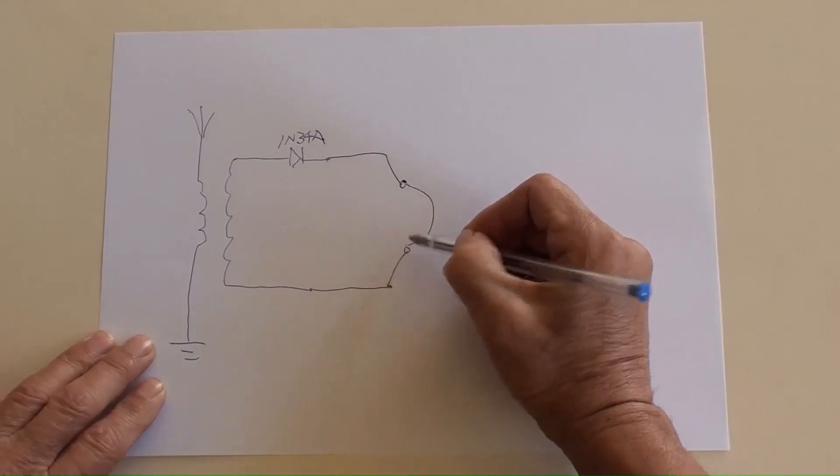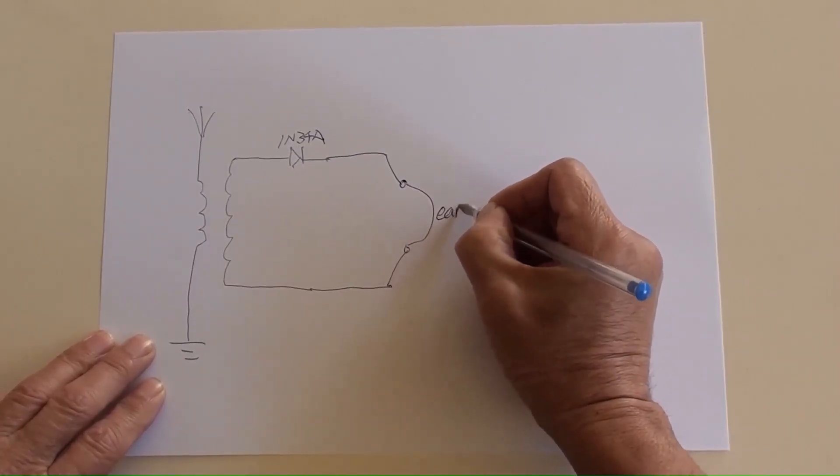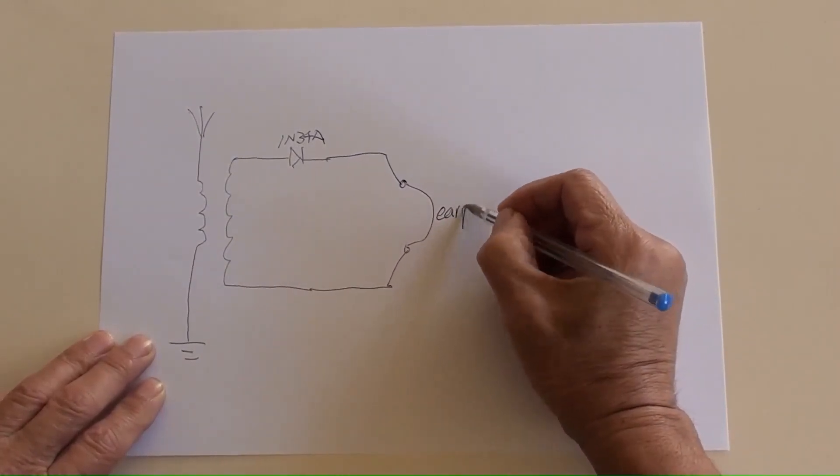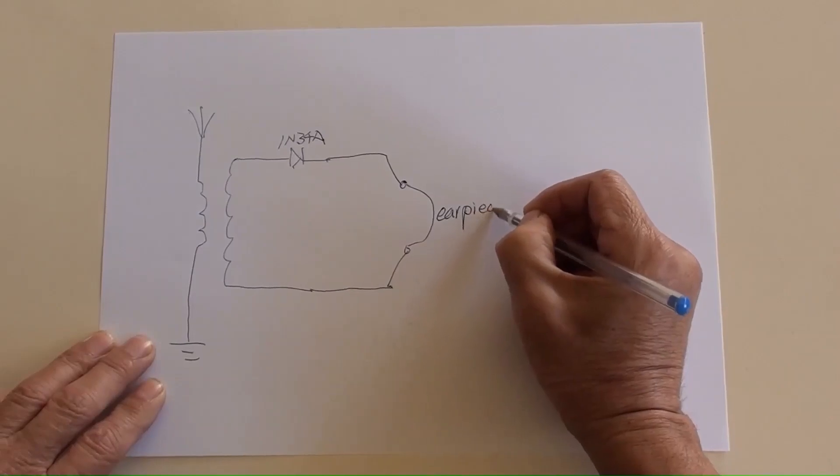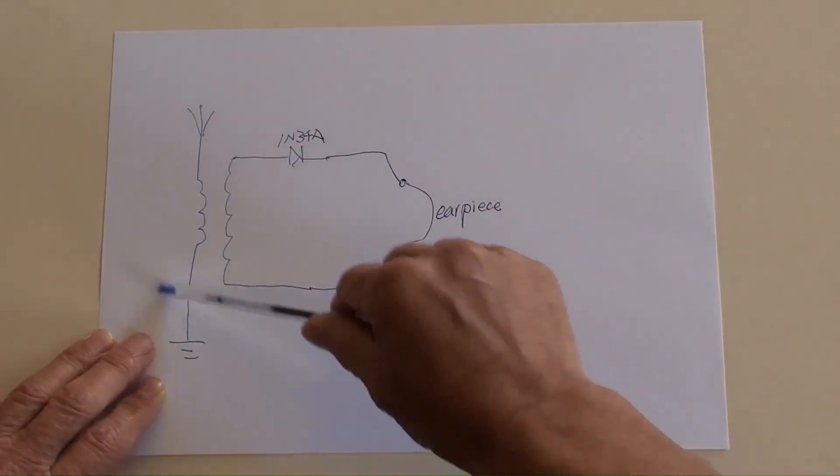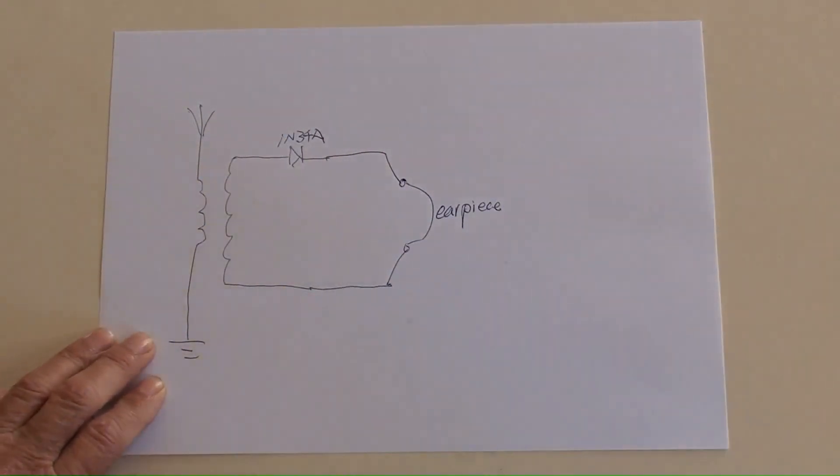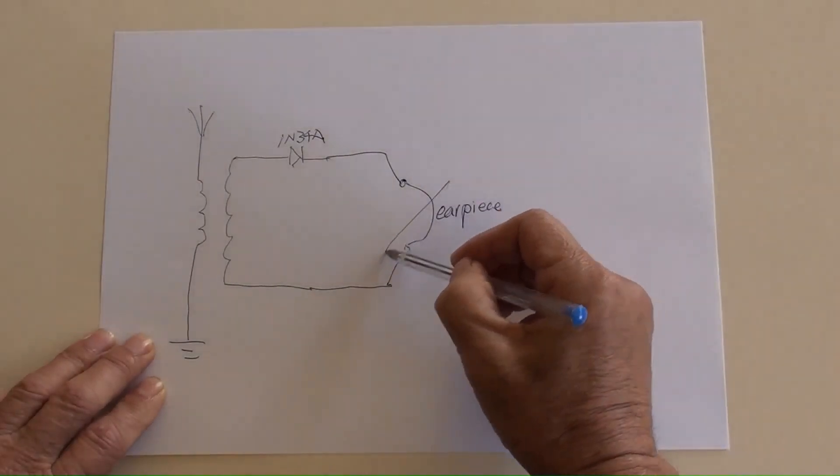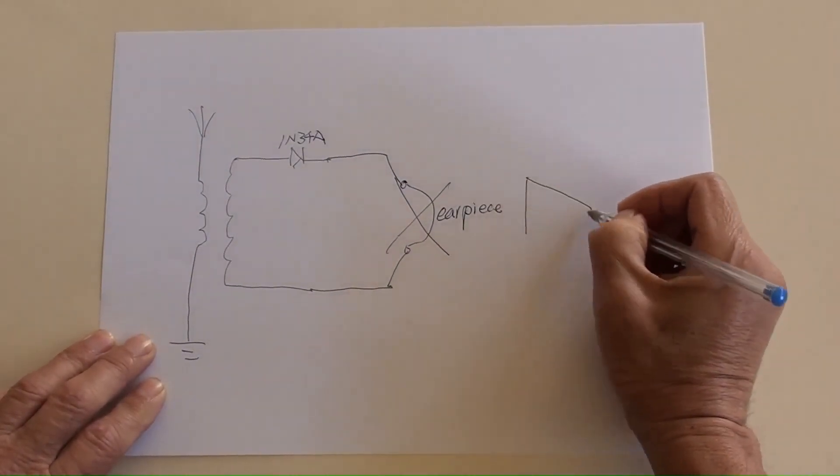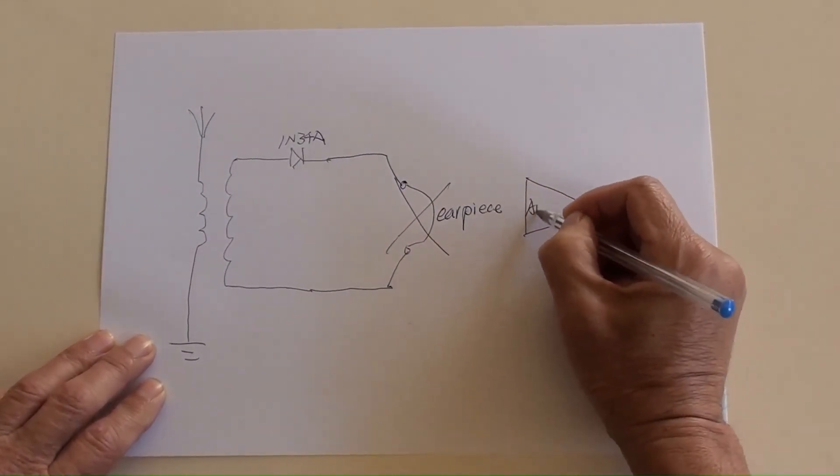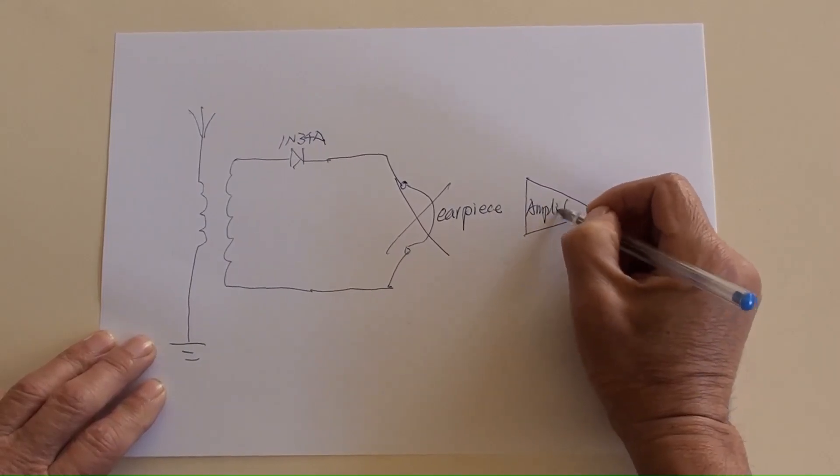And an earpiece which is one with high impedance such as 2000 ohm. That's it, the circuit is very simple. Instead of the earpiece, today I'm going to use an amplifier.